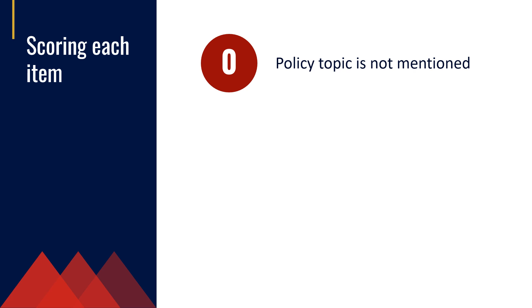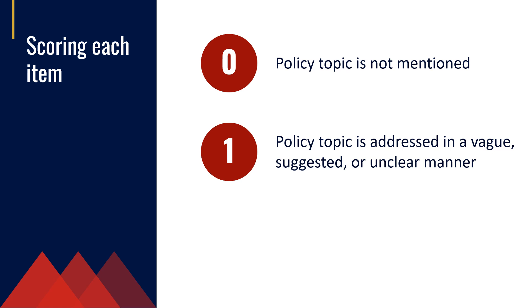A 0 means the item is not included in the text of the policy. Assign a rating of 1 when the item is mentioned, but the policy will be hard to enforce because the statement is vague, unclear, or confusing.